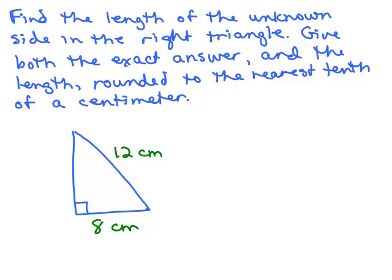Here's the first problem. Find the length of the unknown side in the right triangle. Give both the exact answer and the length rounded to the nearest tenth of a centimeter. We're trying to find the length of this unknown side, which is a leg because the hypotenuse is the longest side opposite the right angle. Let's call this X. See if you can write the equation and solve for X. Put it on pause and try that on your own.